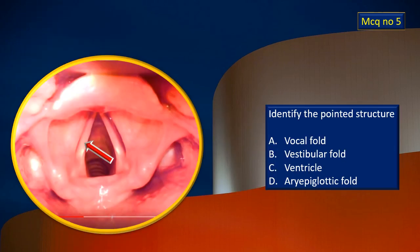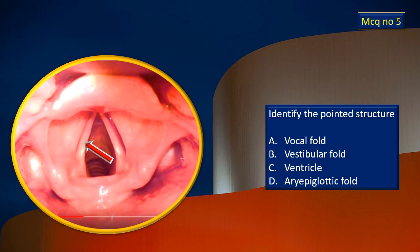MCQ number four — yet another item in the same specimen. The arrow mark is being flashed; identify that arrow-pointed structure. Last one, MCQ five: this is an endoscopic view of the inlet to the larynx, and into the larynx also. Certain structures are seen and there is a flashing arrow — identify that particular structure.